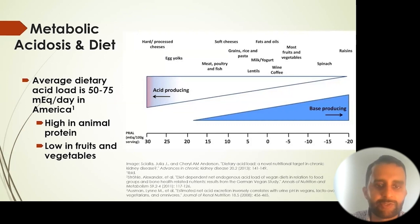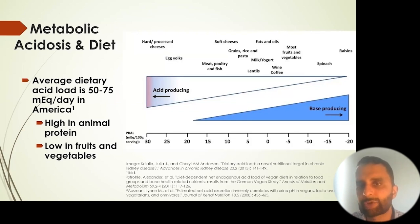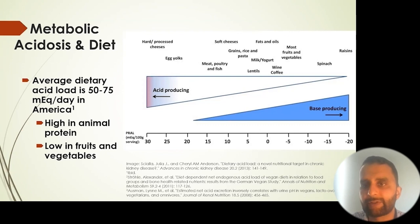Hard processed cheeses are at one end, followed by egg yolks, then meat, poultry, fish, and soft cheeses. In the neutral area, you have grains, rice and pasta, lentils, milk, yogurt, wine, coffee, fats, and oils.